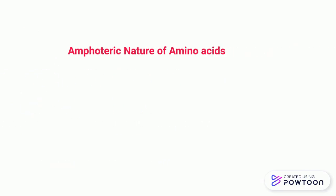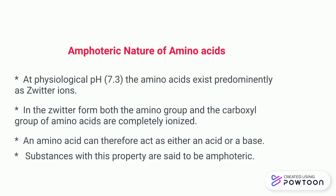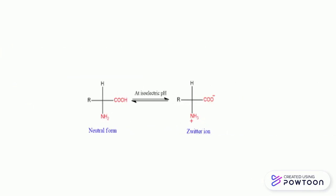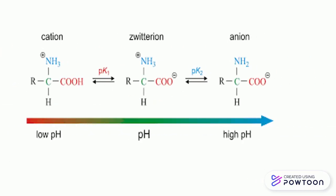Now, the amphoteric nature of amino acids. At physiological pH, amino acids exist predominantly as zwitterions. In the zwitterion form, both the amino group and the carboxyl group are completely ionized. An amino acid can therefore act as an acid or a base; substances with this property are called amphoteric. This is the zwitterion form of amino acids.